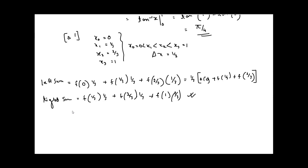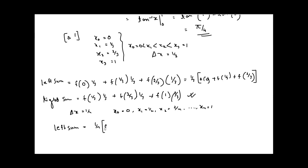Now if we divide the interval [0, 1] into n sub-intervals, our delta x will be 1/n, and the sub-intervals will be x0 = 0, x1 = 1/n, x2 = 2/n, and so on up to xn = 1. Taking the left sum for n sub-intervals gives 1/n times [f(0) + f(1/n) + ... + f((n-1)/n)]. If you calculate this and take n tending to infinity, you will get this sum as pi/4.